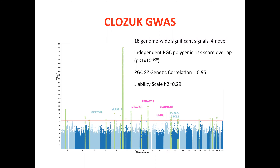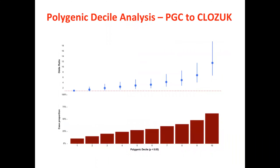We reproduced PGC polygenic score results in a decile sense: using independent PGC samples as a training set and targeting CLOZUK split into deciles, cases and controls show the typical pattern where moving up the polygenic score increases the odds ratio of being a case versus a control. Given the two-to-one control-to-case ratio, we see increasing specificity particularly at upper deciles.